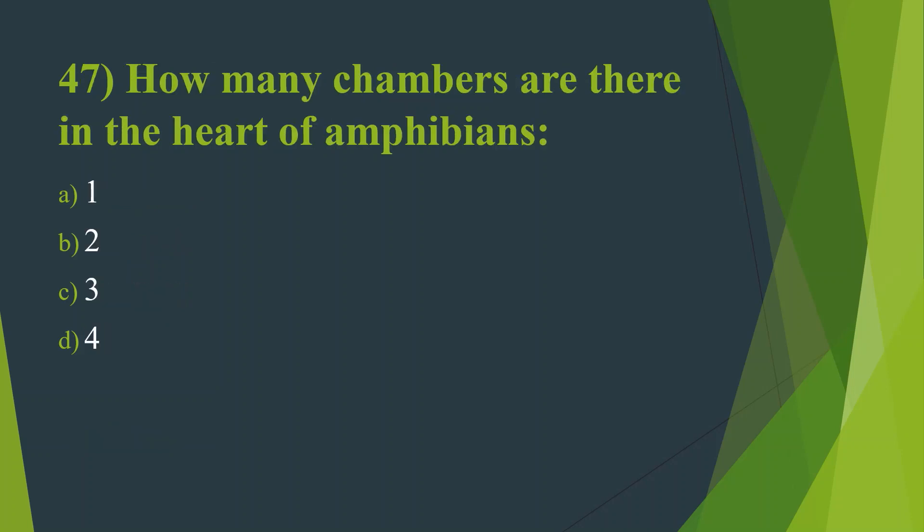Forty-seventh question: How many chambers are there in the heart of amphibians? Option A, One. Option B, Two. Option C, Three. Option D, Four. Answer is Option C, Three.